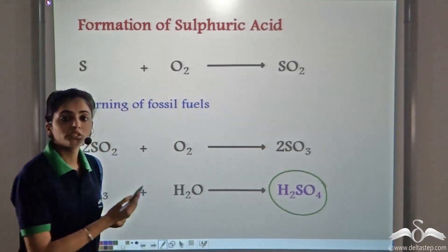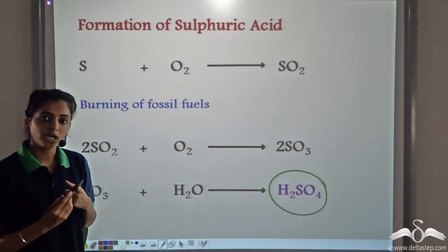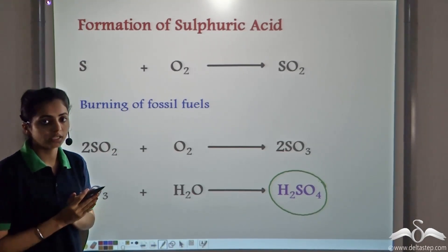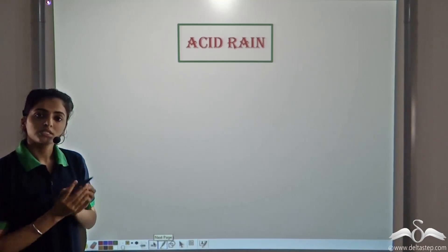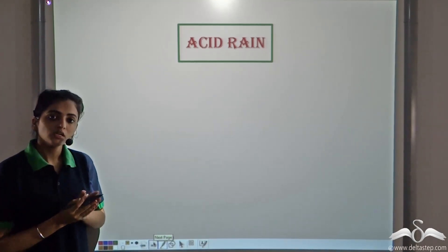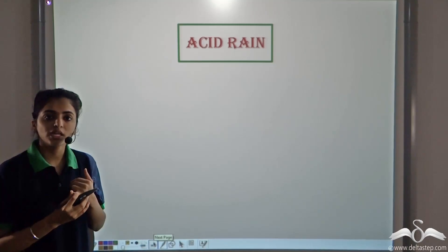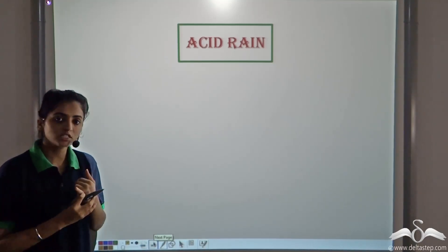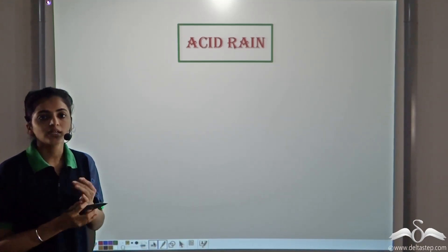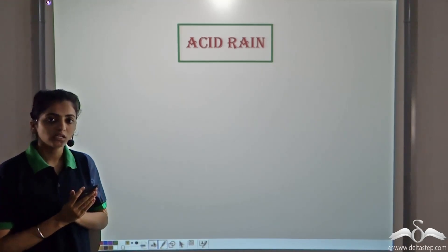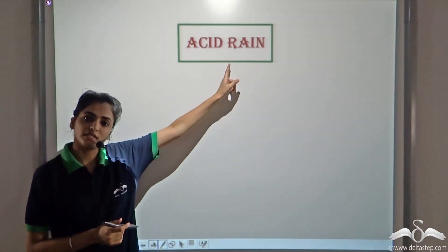So now these acids — nitric acid and sulphuric acid — are present in the atmosphere. Any form of precipitation that takes place, whether rain, fog, snow, and so on, contains these acids. We call this type of precipitation acid rain.